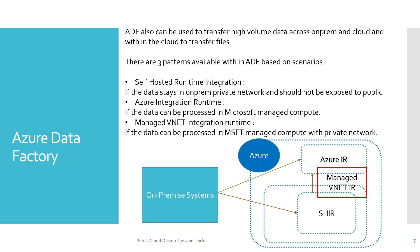There are three integration runtime patterns available within Azure Data Factory. The first is Self-Hosted Integration Runtime, used when data transfer happens over a private network — for example, transferring files from an on-prem environment to Azure cloud privately, where the compute resources also sit in the private network. The second is Azure Integration Runtime, a Microsoft-managed runtime environment where the compute resources responsible for data transfer sit in the Microsoft data center, used when there is no strict data security requirement.